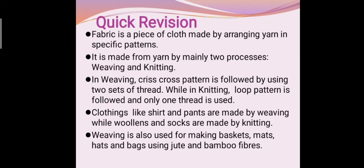Now let's do a quick revision. Fabric is a piece of cloth made by arranging yarn in specific patterns. It is made from yarn by mainly two processes, weaving and knitting. In weaving process, criss-cross pattern is followed by using two sets of thread. While in knitting, loop pattern is followed and only one thread is used. Clothings like shirts and pants are made by weaving while woolens and socks are made by knitting. Weaving is also used for making baskets, mats, hats and bags using jute and bamboo fibers.